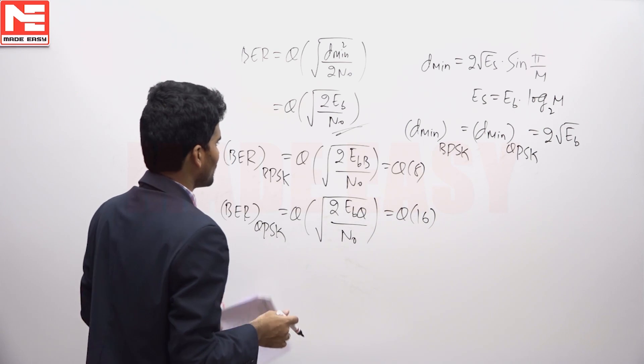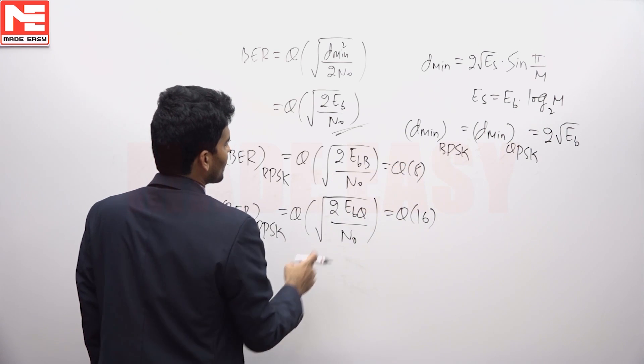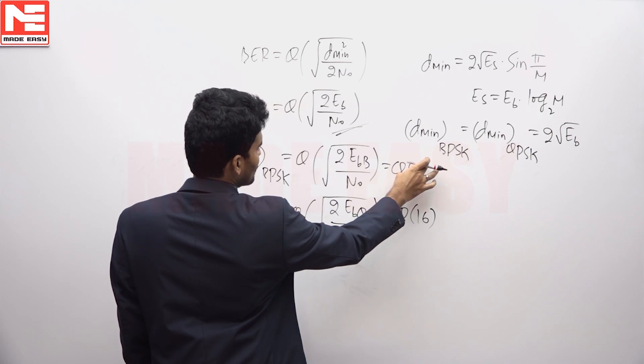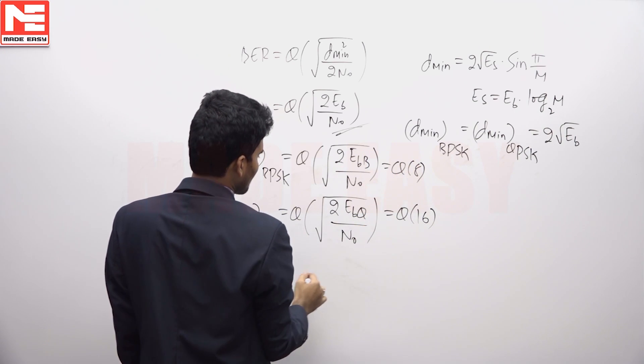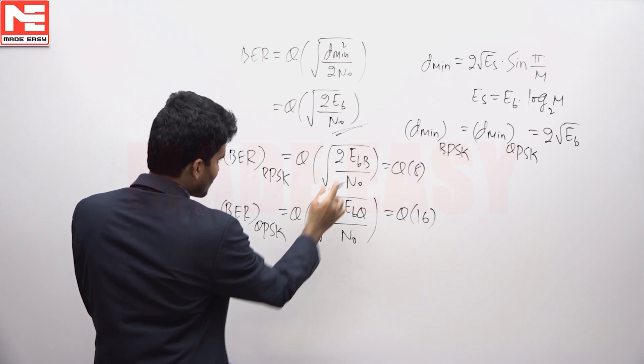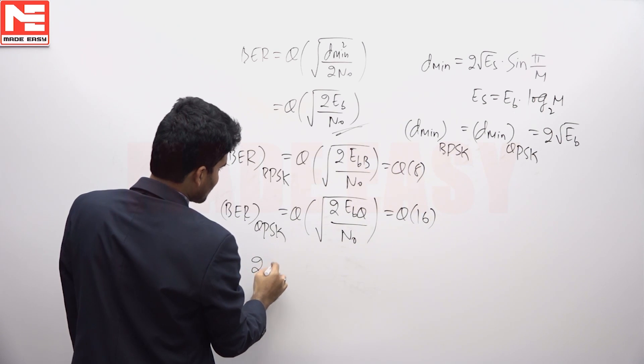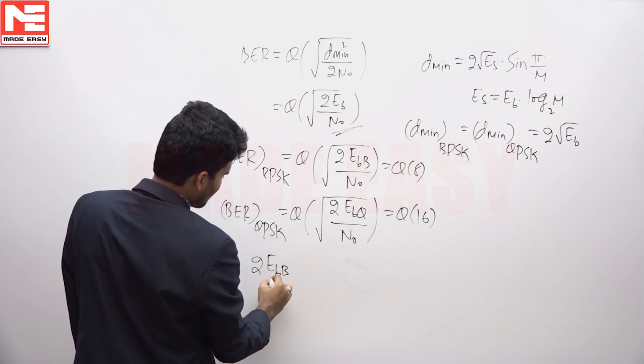From here I can write Q of X1 equals Q of X2, so X1 equals X2. This is 2 EBB by N0 equals 8 squared.